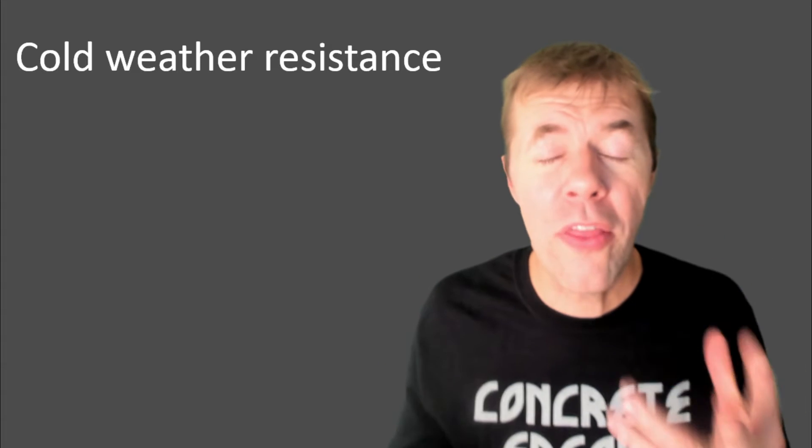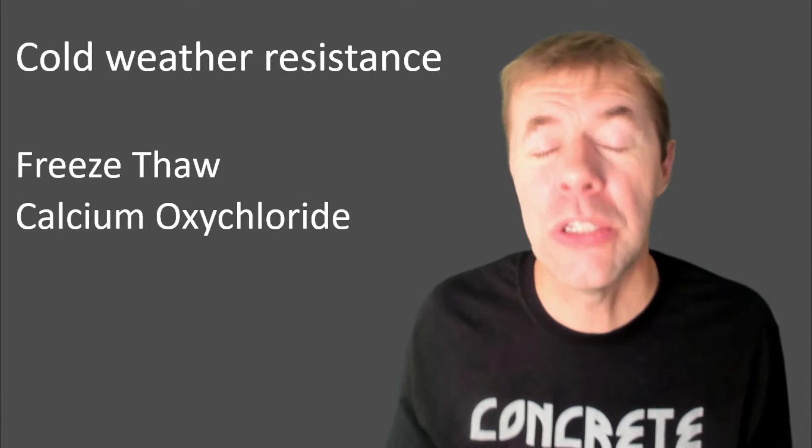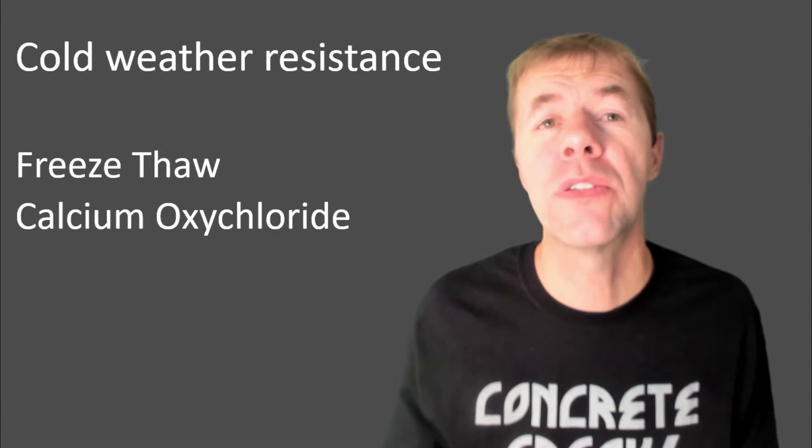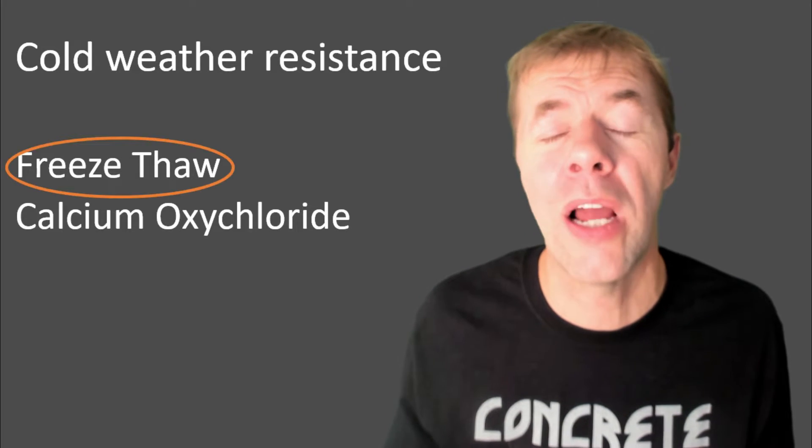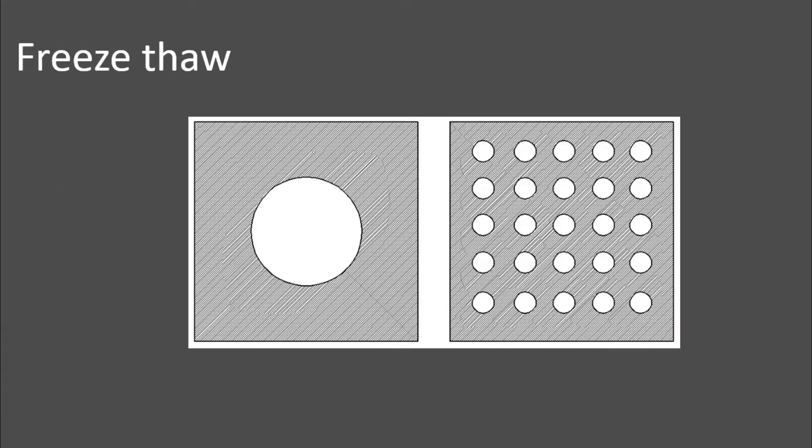Now let's talk about cold weather resistance. And there's typically two of them, freezing and thawing resistance and calcium oxychloride. Let's start out with our freezing and thawing friends. And this is truly about air in the concrete. It's not only air, but the simplest way to control this and make sure this is right is to get the air content right.